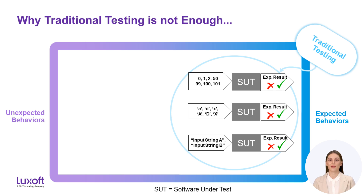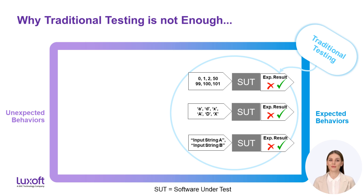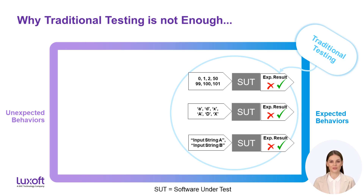Since these tests are based on the requirements and on the expected behavior of the software component, we typically cover input values we would consider as relevant to test. For example, if we have an interface that expects integer values in the range of 1 to 100, we set up some test cases covering the boundaries — in our case 1 and 100 — and a value in between, and calculate and verify the expected output for these exact values to verify the software under test.